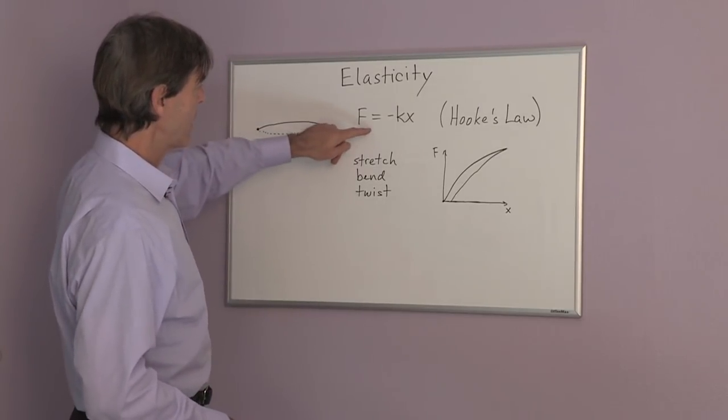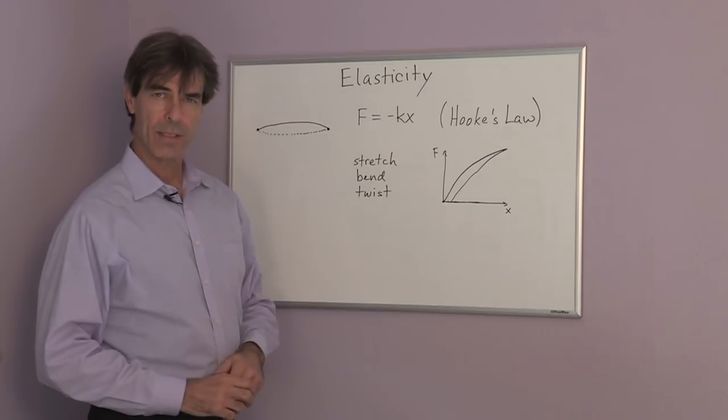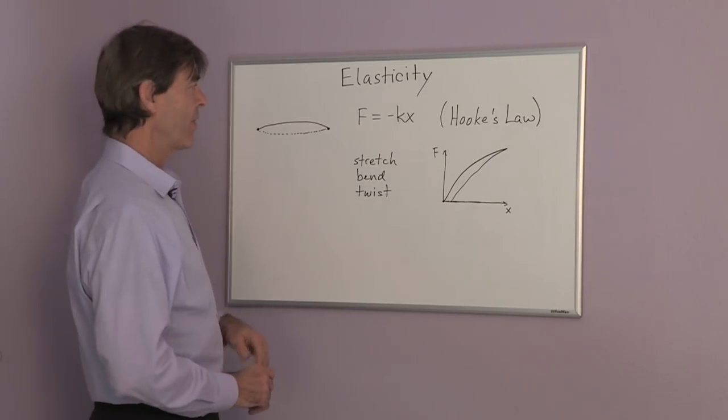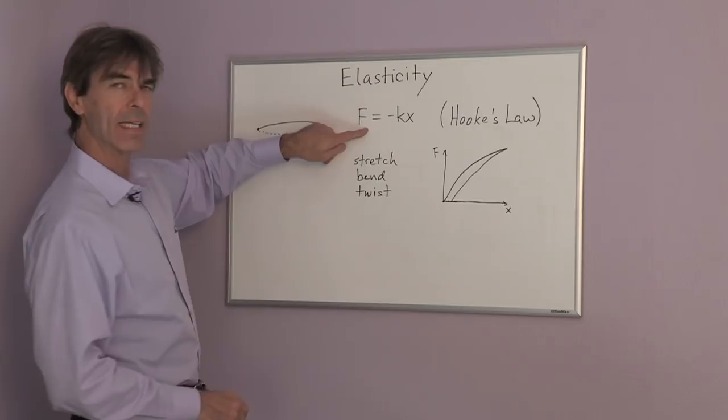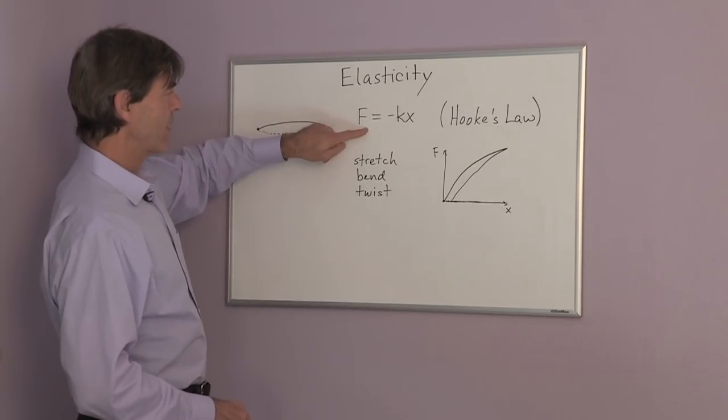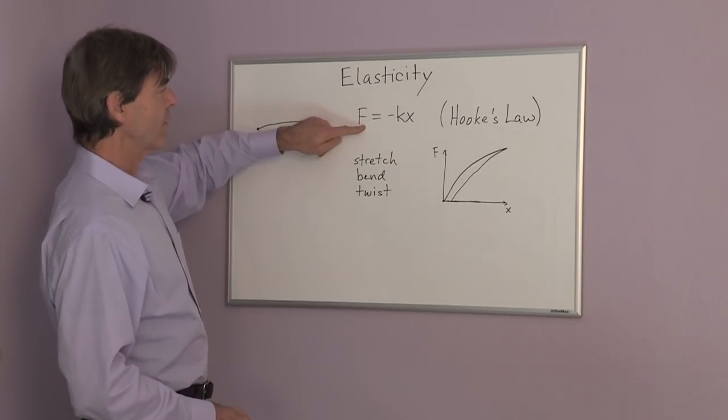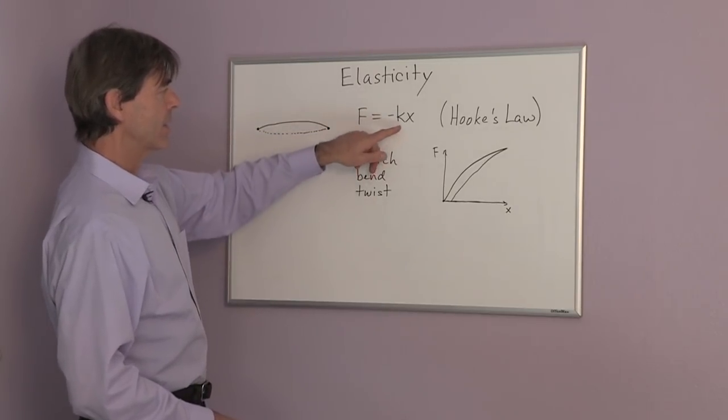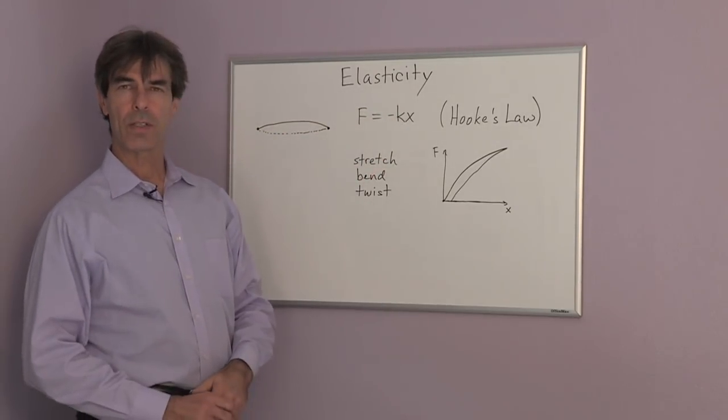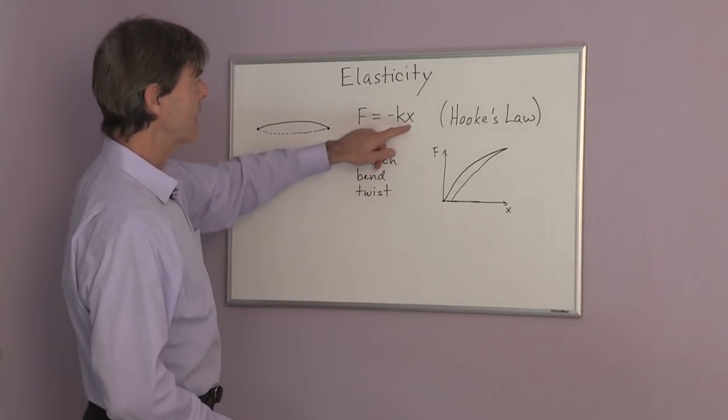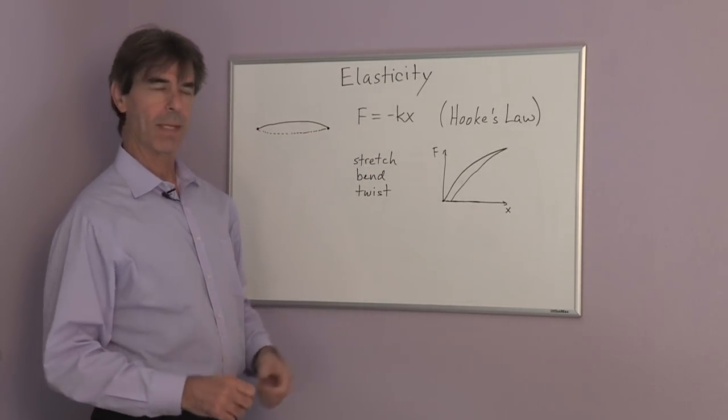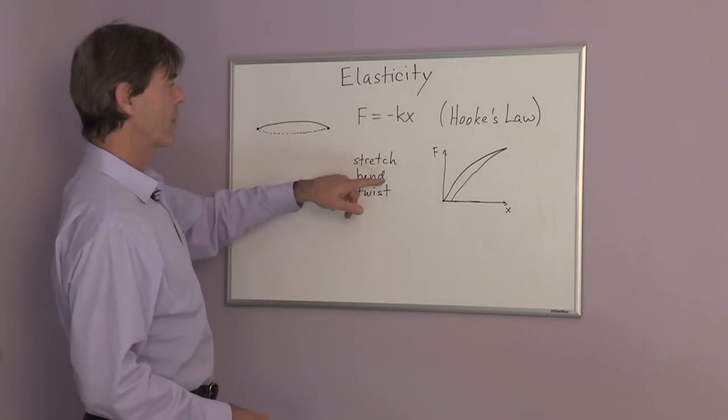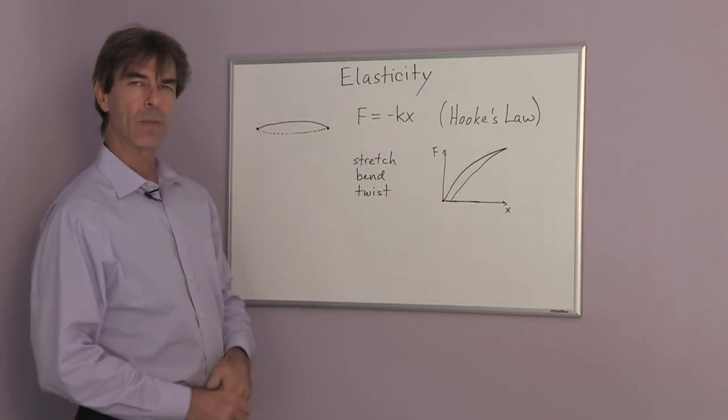And for most materials that we call elastic, this relation is linear. We have the force from elasticity and that's proportional to some constant, which is called a spring constant, times the distance that we stretch something. But we could also write a similar formula for bending or twisting.